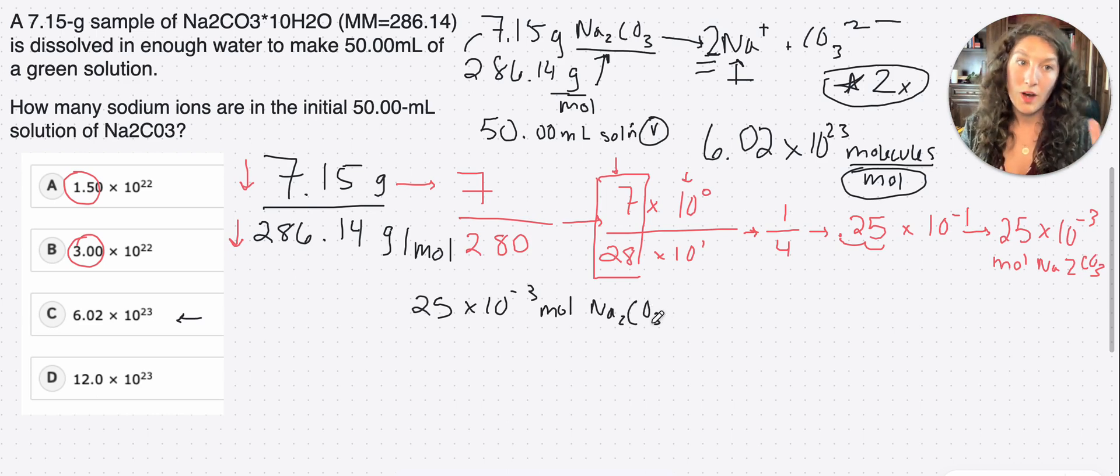So now we have two options. Both are equally okay to do. Whatever works with your brain better, that's the one to use on test day, okay? So option one, we can do the molar conversion first, all right? So we can go from the moles of Na2CO3 to the moles of sodium ion. The way we do that is we just multiply by the molar ratio, right?